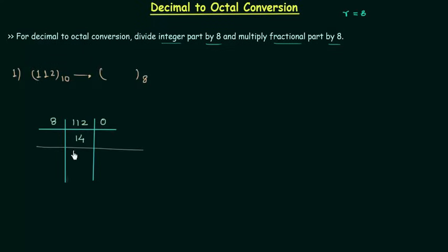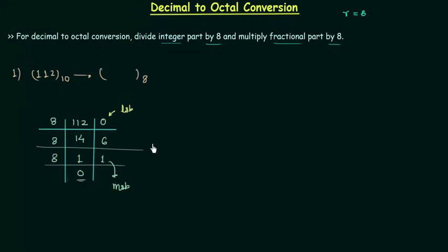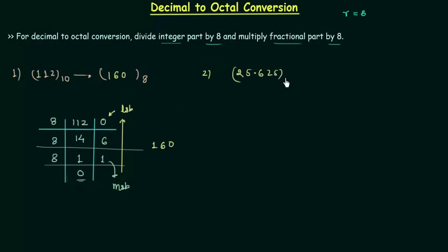We will again divide 14 by 8 and we will have quotient as 1 and remainder is 6. Then 1 divided by 8: quotient is 0 and remainder is 1. We will stop here. This 1 is the MSB and this 0 is the LSB. We start from bottom and go up, so 1 6 0 is the octal number which represents 112 in decimal.